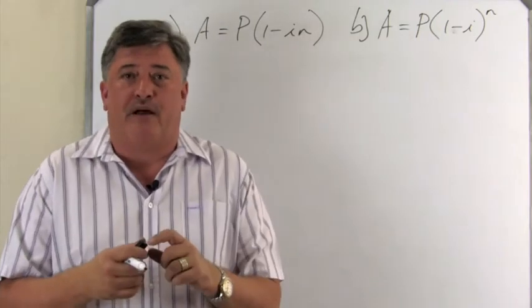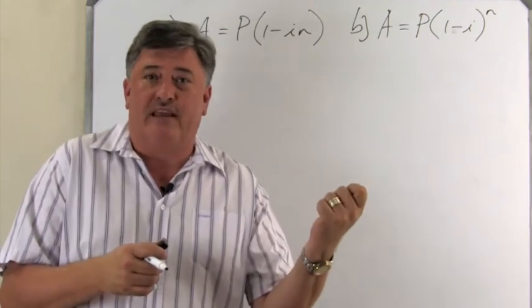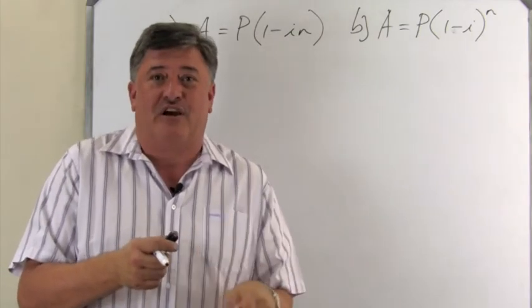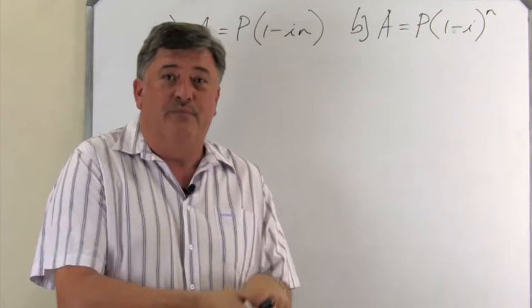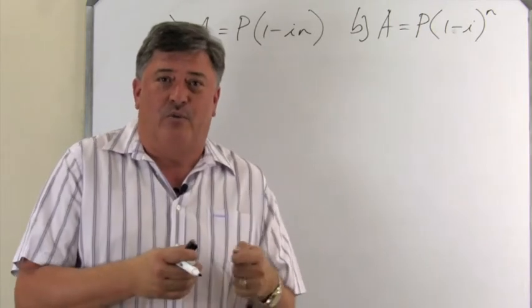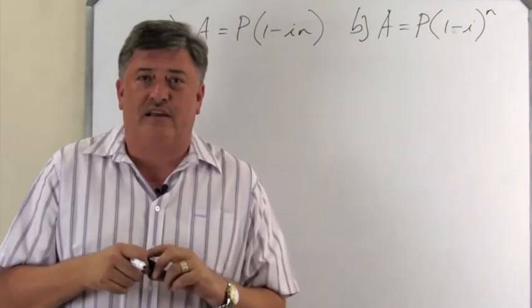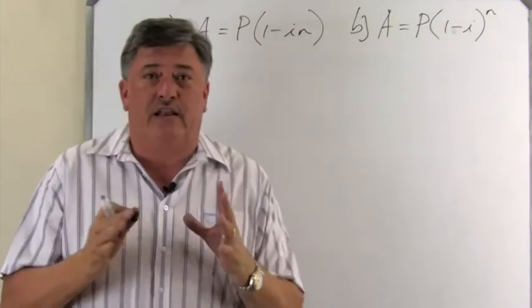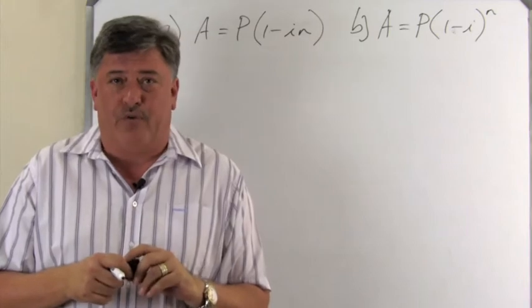So, the same with compound interest, the balance will increase because you get interest on interest. Now, you will get a depreciation on a depreciated value, and that is why they call it the reducing balance method. So, those are the two methods, and you must be able to do both of them.